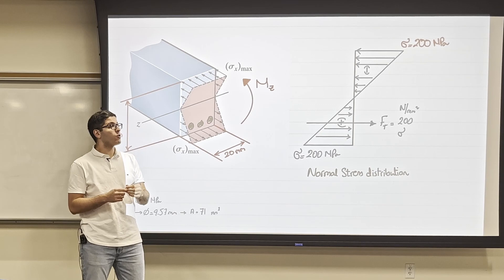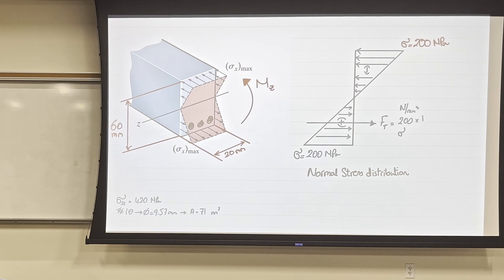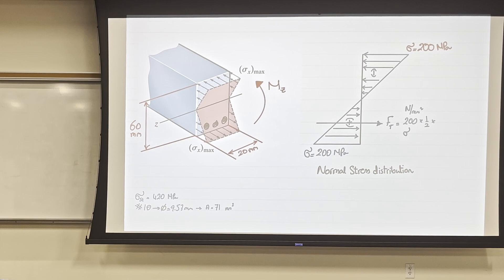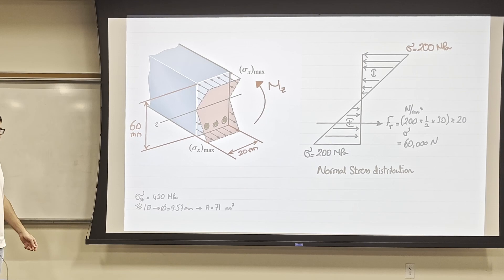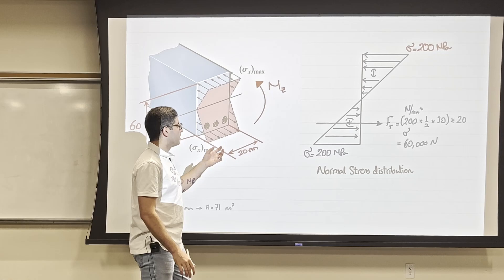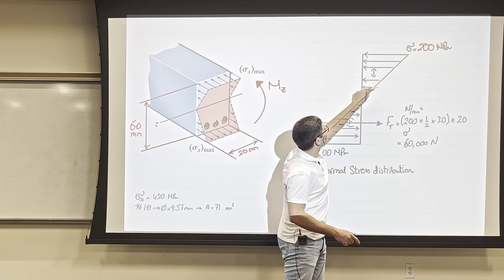The top side is in compression. If I want to find the resultant compression force, I calculate half times 200 MPa times half the height (which is 30) times the width of 20, giving 60,000 N. So this side of the beam has a 60,000 N tension force. We found the resultant from the stress — resultant tension at the bottom, and resultant compression at the top by calculating area times width.